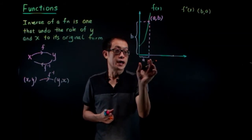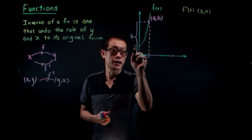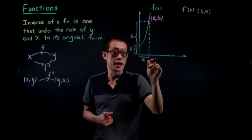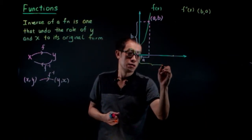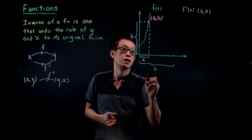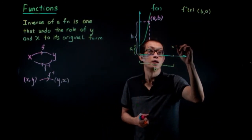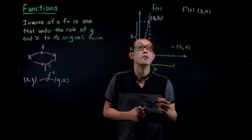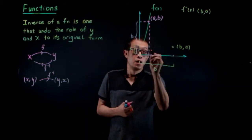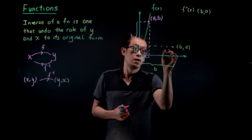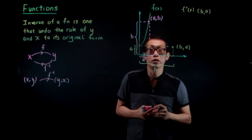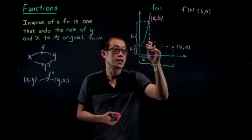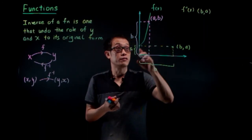So where is the location of this point (B, A)? The x-part goes to B and the y-part goes to A. The Y of F becomes the X of F inverse.